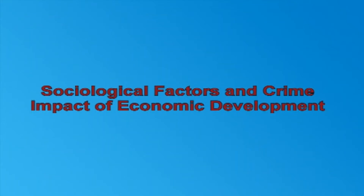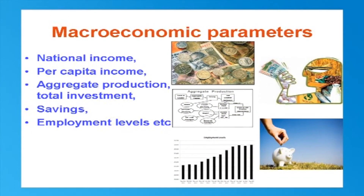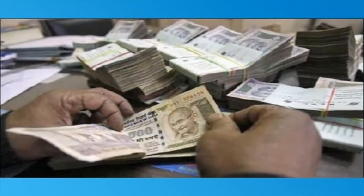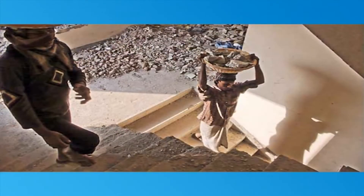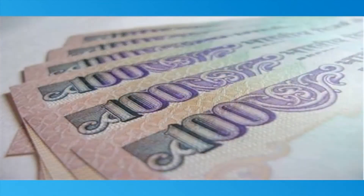We shall now pass on to sociological factors and crime — in particular, the impact of economic development on crime. Economic growth and development have brought many changes in the macroeconomic parameters like national income, per capita income, aggregate production, total investment, savings, employment levels, etc. Development brings structural changes in the economic system. Since the five-year plans were launched, the national income and per capita income have been steadily increasing. No doubt prices also are increasing. Today, an average building worker earns a daily wage of rupees 500 to 600, which is many times greater than what their counterparts were getting some 20 to 30 years back.